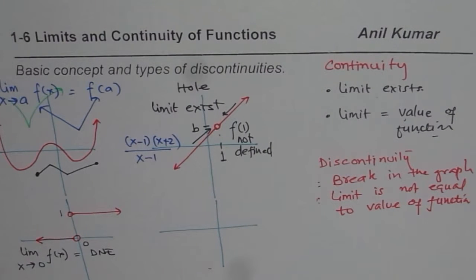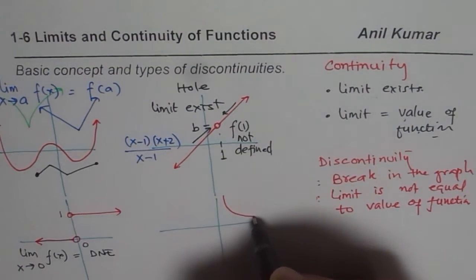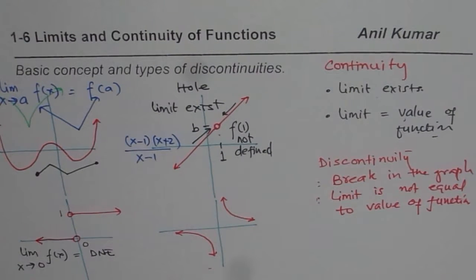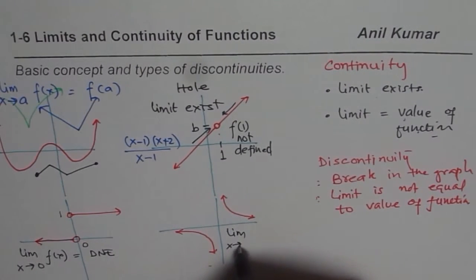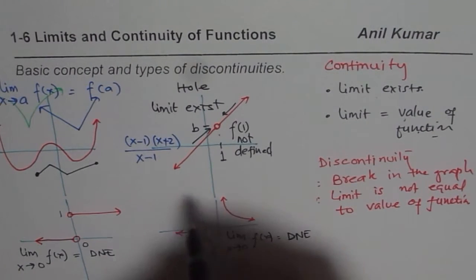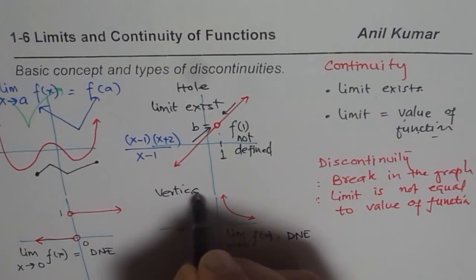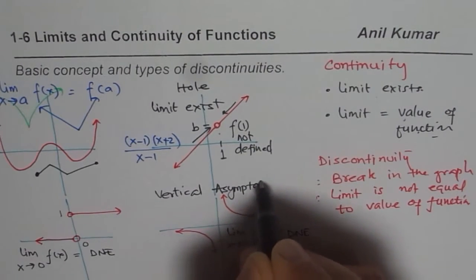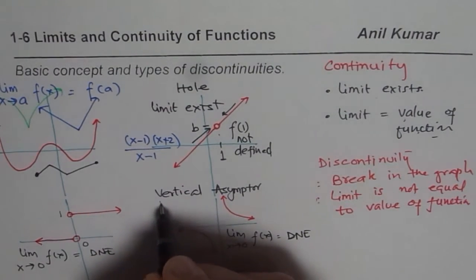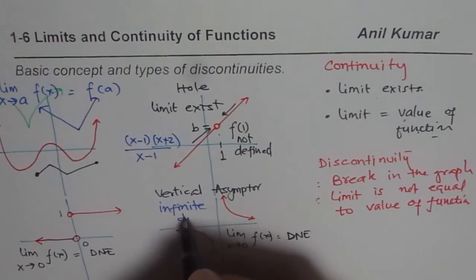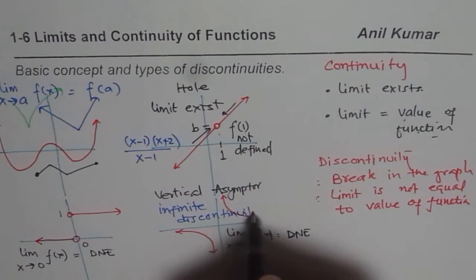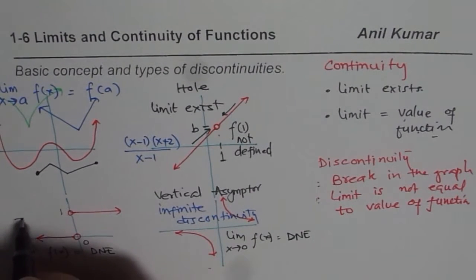A similar case exists in a reciprocal function, which has a vertical asymptote. In this function, the limit does not exist at x = 0 — the limit as x approaches 0 does not exist. The reason is the vertical asymptote, and this type of discontinuity is referred to as infinite discontinuity.